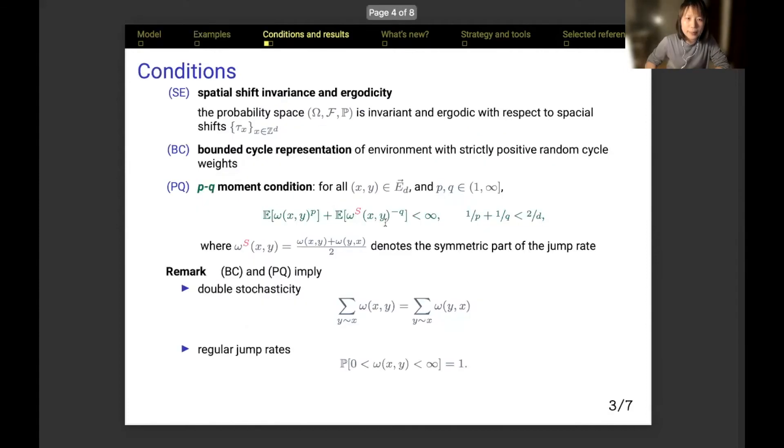To investigate the macroscopic behavior of the random walks in the quenched setting, we give ourselves three conditions. The first one is very trivial: the probability space is invariant and ergodic with respect to any spatial shift in lattice. Second, almost every environment admits bounded cycle representation, and the cycle weights are always strictly positive.